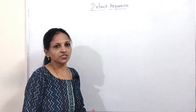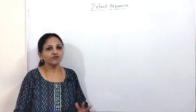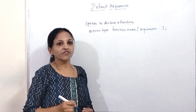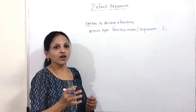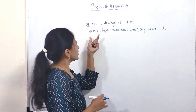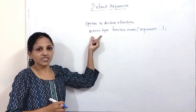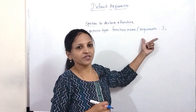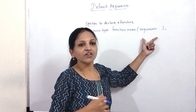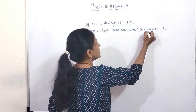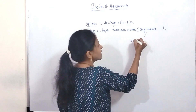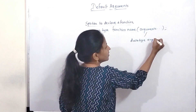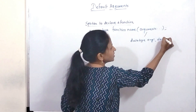When we use functions in our program, we can pass arguments to that function. Whenever we declare a function, we follow this syntax: we write the return type first, then the function name, and we pass arguments. Each argument is written as data type followed by argument name — data type argument1, then data type argument2, and so on.